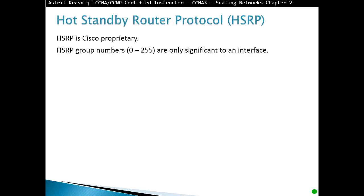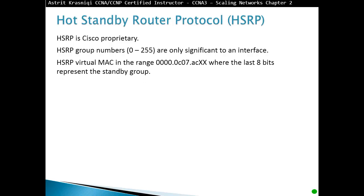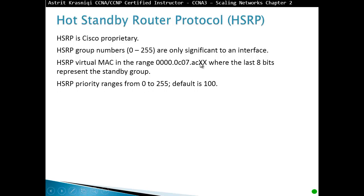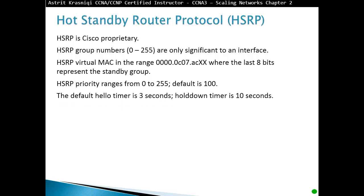HSRP is Cisco proprietary and its group numbers range from 0 to 255, significant only to an interface. The HSRP virtual MAC address format is 0000.0c07.acXX, where the last 8 bits (XX) represent the standby group number in hexadecimal — for example, group 10 is 0a, and group 16 is 10. HSRP priority ranges from 0 to 255 with a default of 100; the router with the highest priority becomes the active router. The default hello timer is 3 seconds and the hold time is 10 seconds — if the standby router does not receive three hello messages, it will take over as the active router.